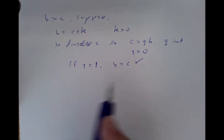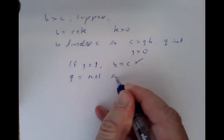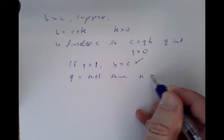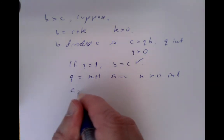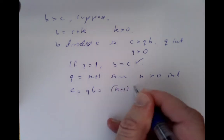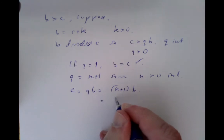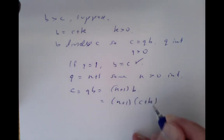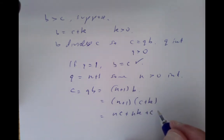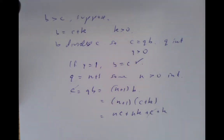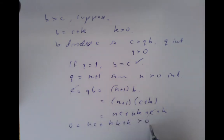But if q is positive and not 1, then q has to be some n plus 1 for a positive integer n. So we can write c equals q times b equals (n+1) times b, and since b equals c plus k, that gives us nc + nk + c + k. We've got a c on both sides, so we cancel, and we get 0 equals nc plus nk plus k — but those are all positive, and that's a contradiction.